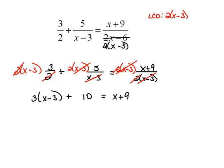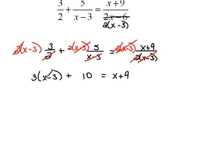Now, to continue solving, we have to distribute our 3. So, this will be 3x minus 9 plus 10 equals x plus 9. And then, let's start collecting our like terms. So, we have 3x minus 9 plus 10 would be a plus 1 equals x plus 9.